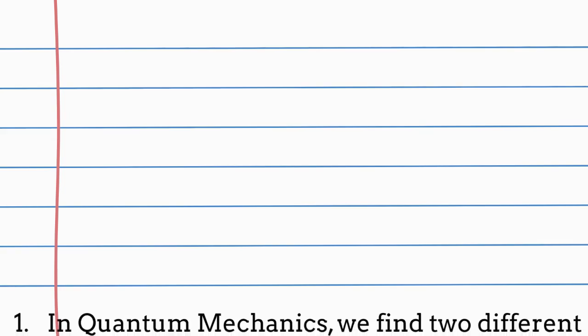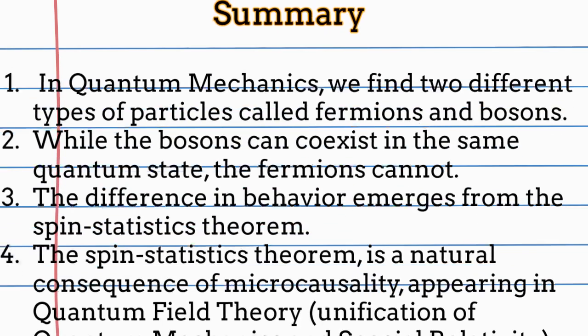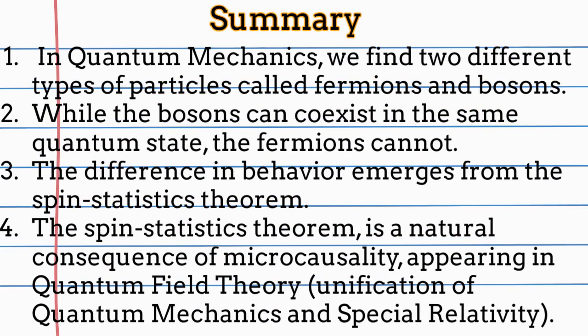In summary, there are two different types of particles in quantum mechanics: bosons and fermions. While bosons can coexist in the same quantum state, fermions cannot do the same. The phenomenon is a natural consequence of the spin statistic theory. The spin statistic theory is a consequence of imposing microcausality in quantum field theory, which is a natural consequence of mixing quantum mechanics and special relativity.